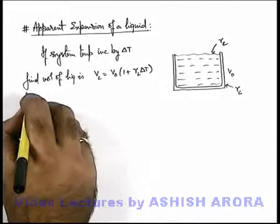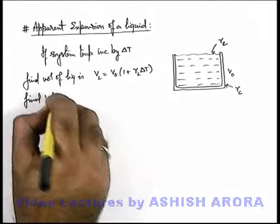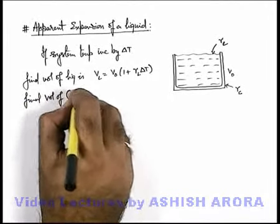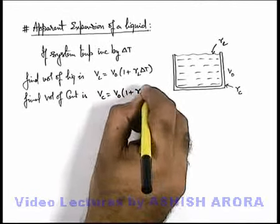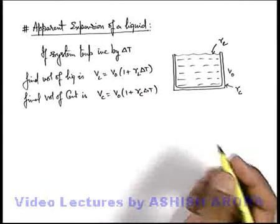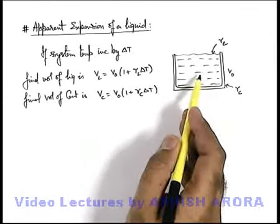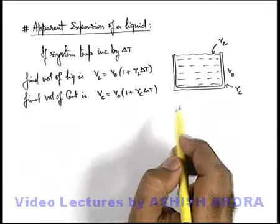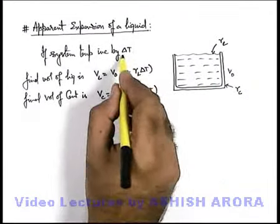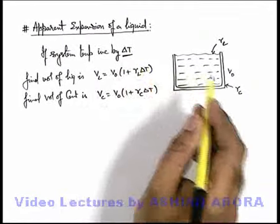And final volume of container can be written as V_c which is V₀(1 + gamma c delta t). As we know, liquids always have the expansion coefficient more than that of solids, and for the same rise in temperature liquid always expands more than solid.